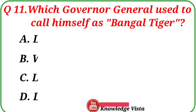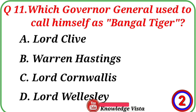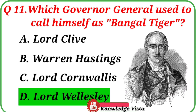Question number eleven: Which governor general used to call himself the Bengal Tiger? Your options are: A. Lord Clive, B. Warren Hastings, C. Lord Cornwallis, D. Lord Wellesley. Correct answer is option D, Lord Wellesley.